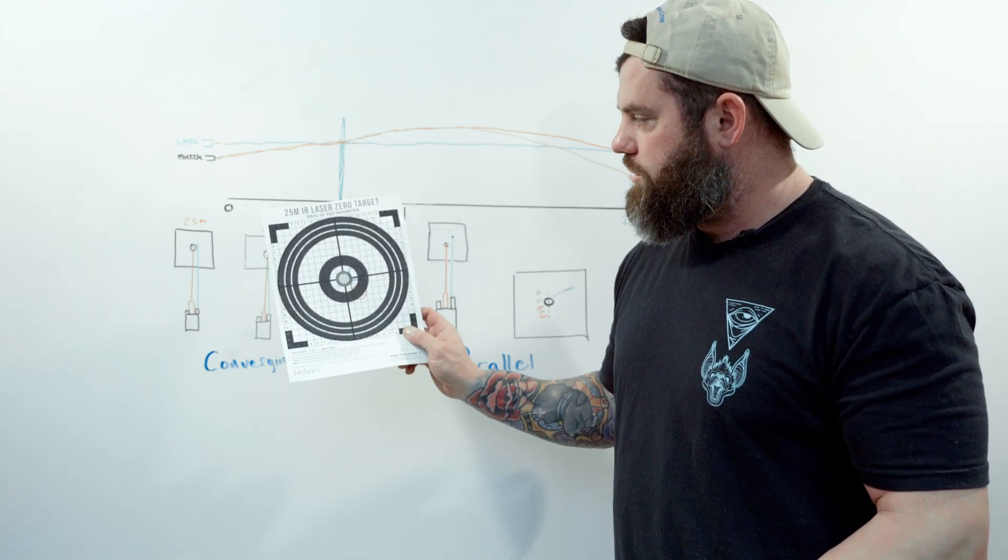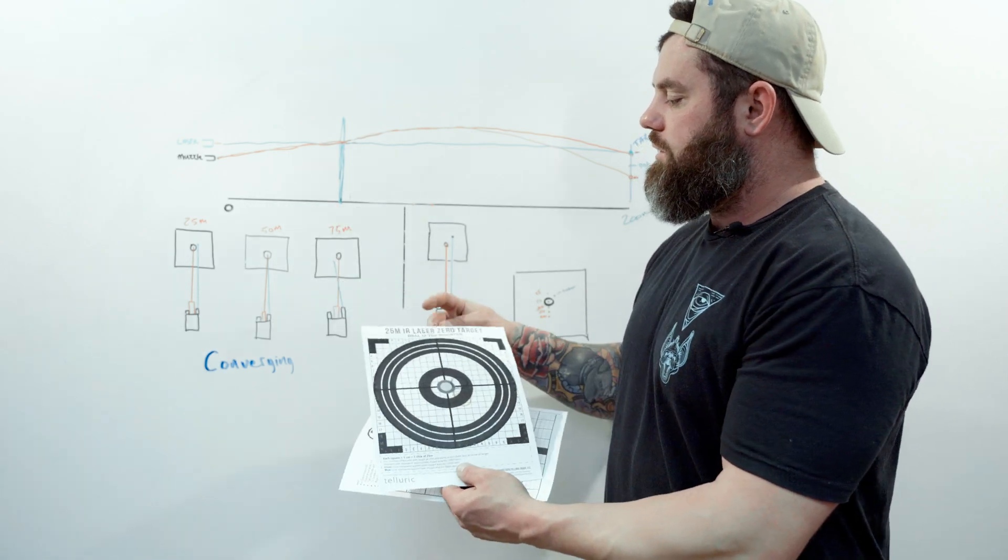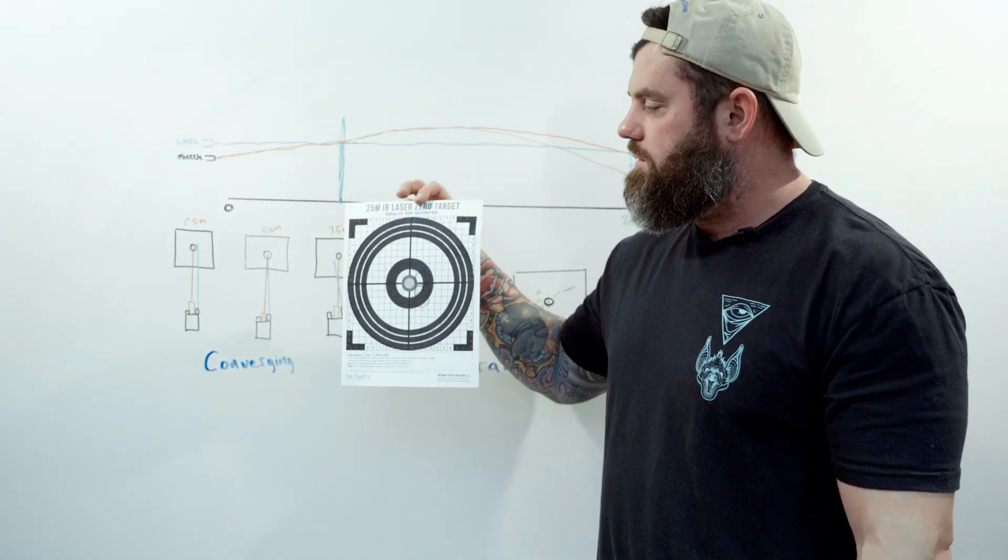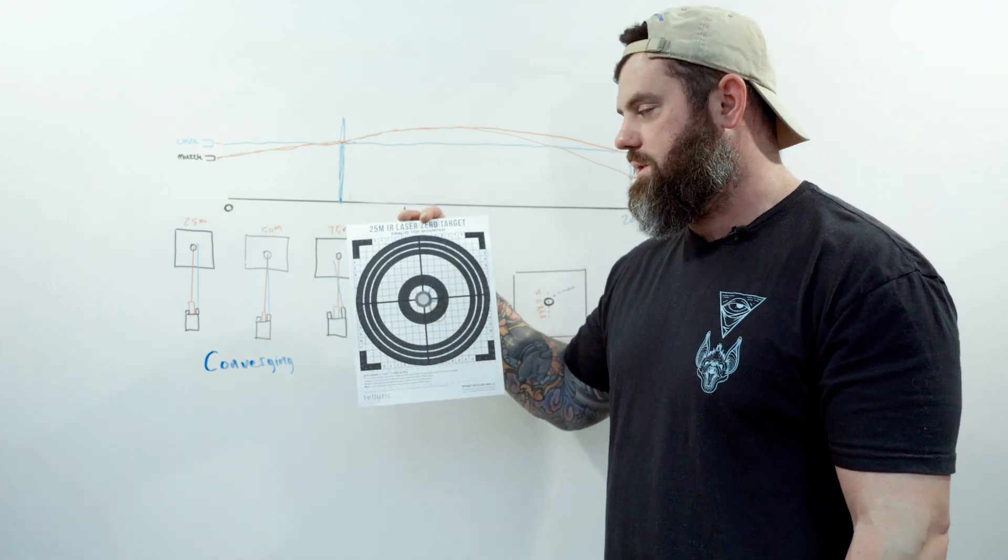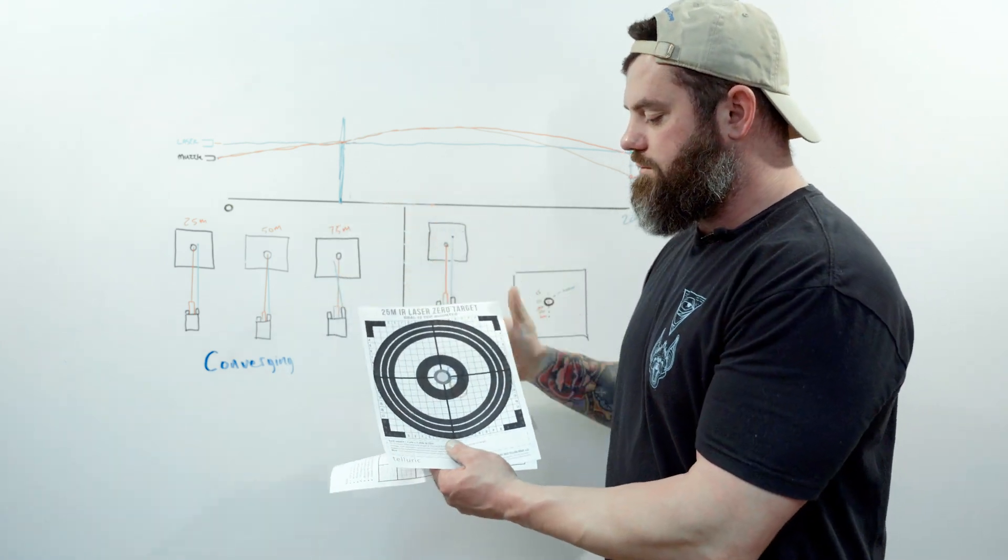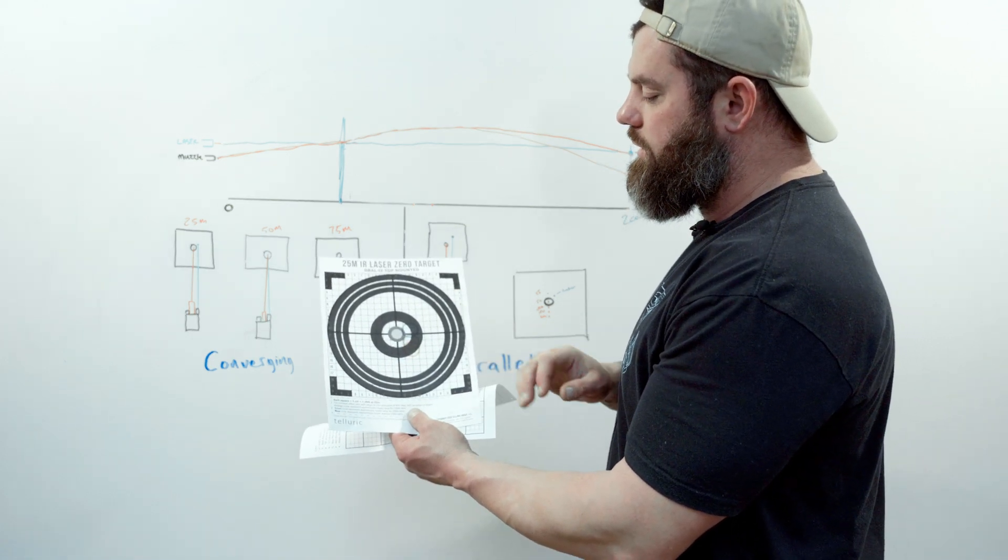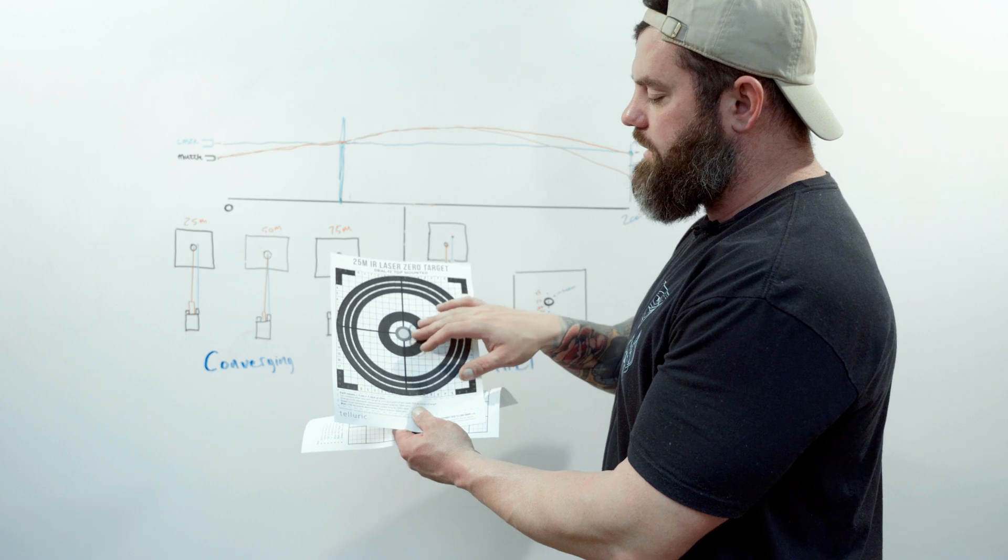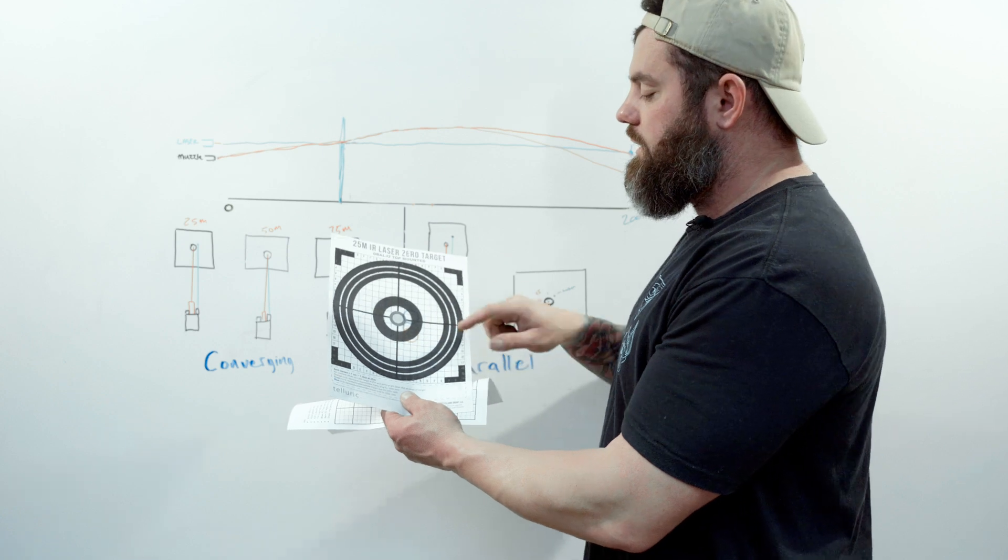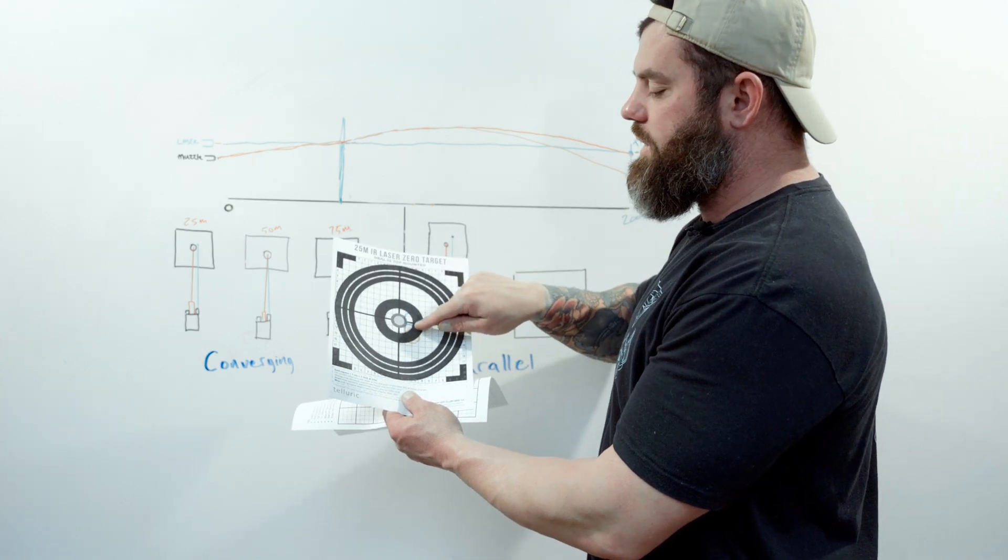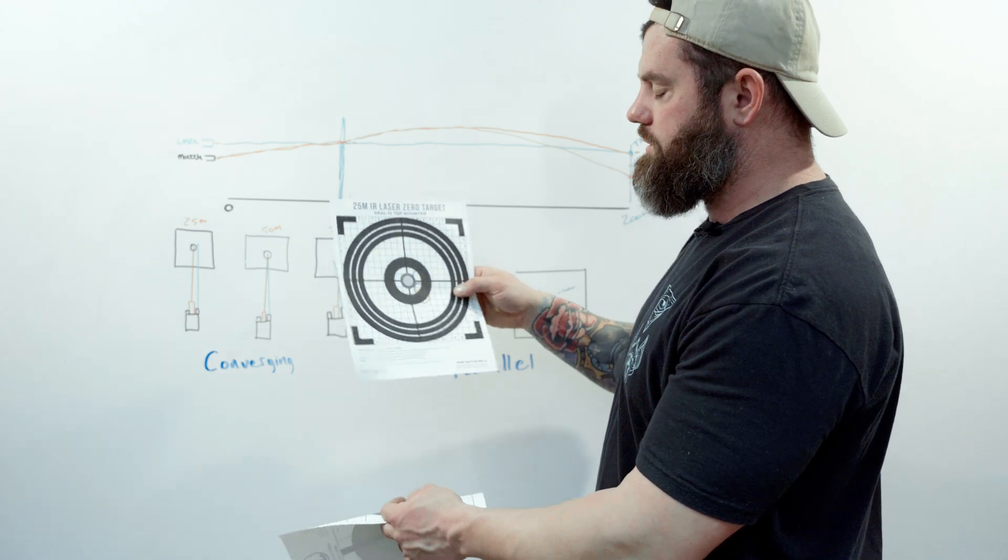The Truglo targets, you can order them for different lasers. Whatever IR laser device you're using, they have one designed for it. Basically, they use a piece of glint tape here in the middle. When your IR laser goes over this, hits it at distance, it really lights up so you know you're on target. And then it gives you where your impacts are supposed to be on that target with really clear instructions also.